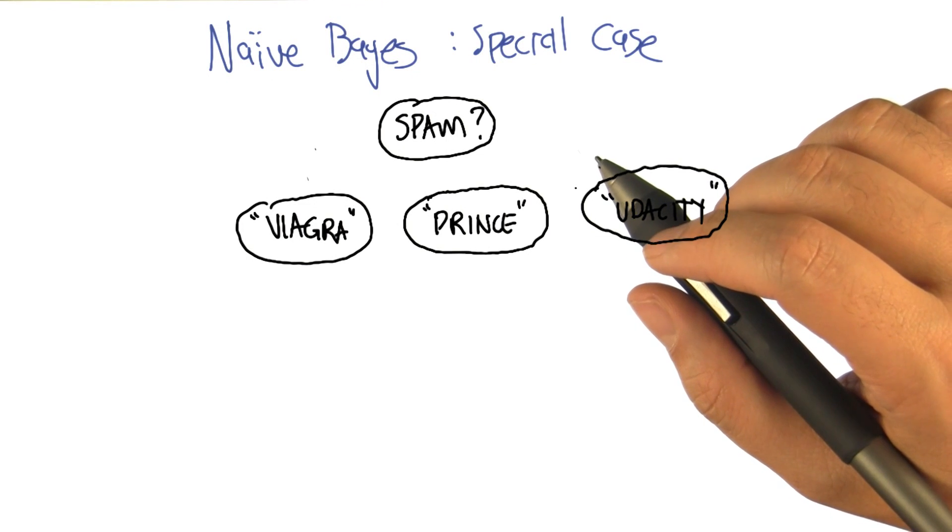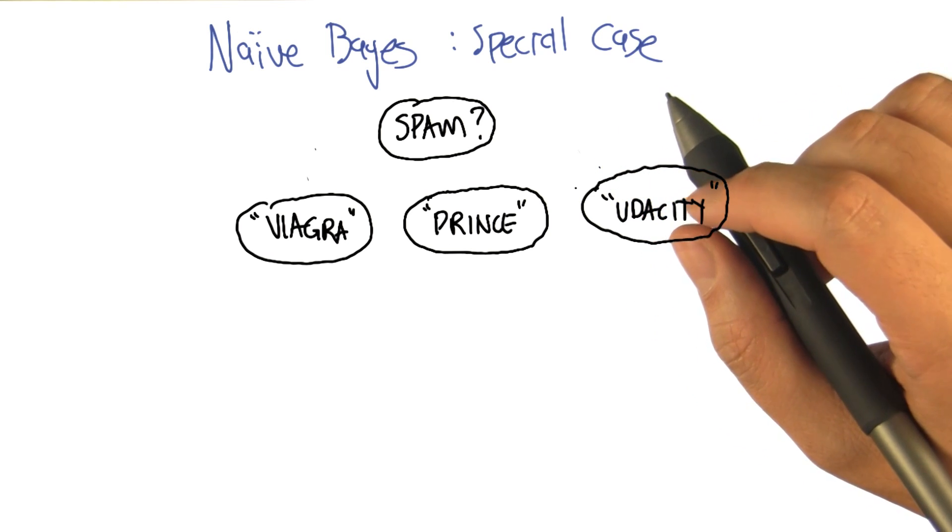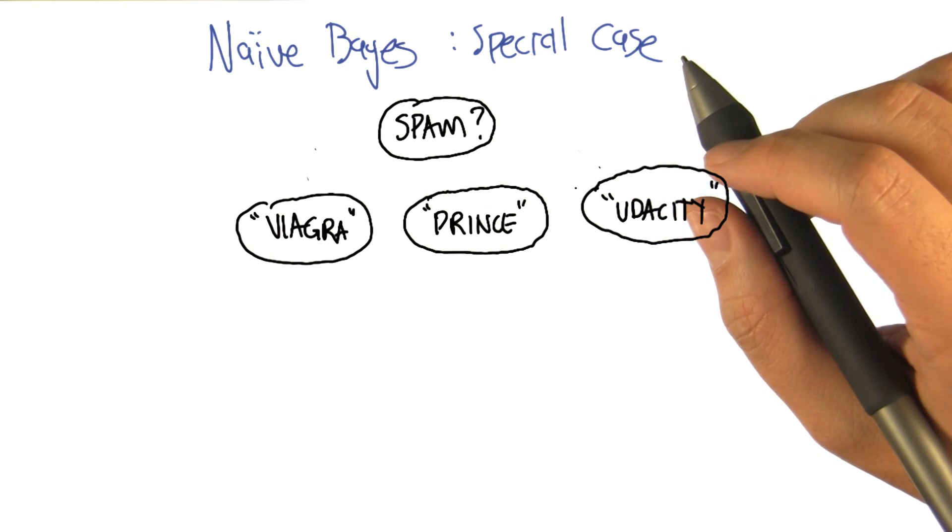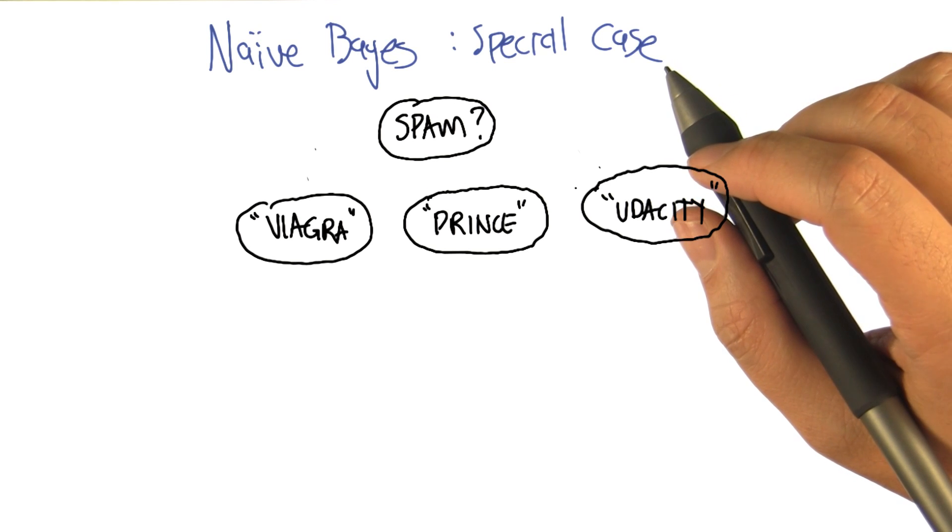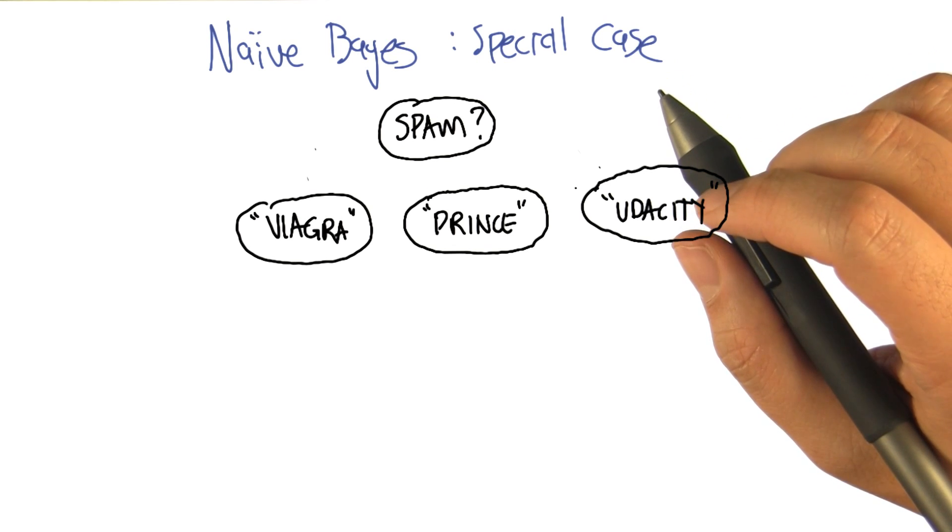All right, so what we'd like to do is work up to an algorithm that can actually do some of these inference steps, instead of having to think it through each time de novo. So what I'm going to do is, let's harken back to an example that we looked at before, which is about spam detection.